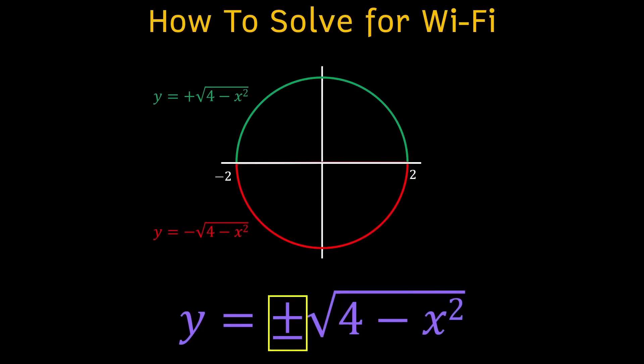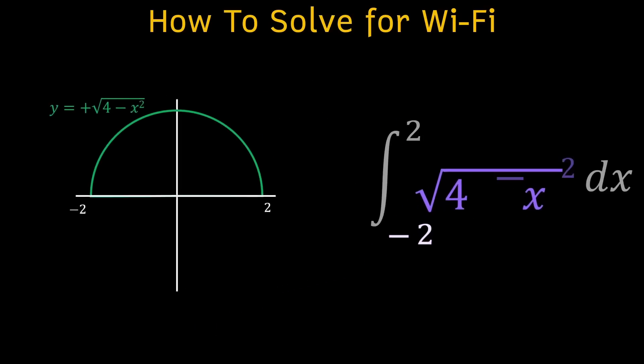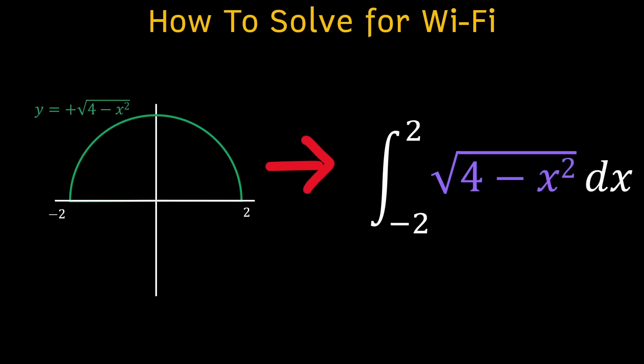And instead of y equaling plus and minus this expression, we only consider the positive portion because that's what we're trying to integrate. And since our integral goes from negative 2 to 2, that means we're finding this shaded portion of the function's area.